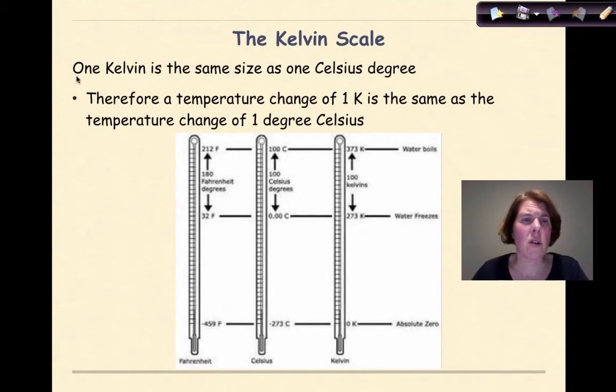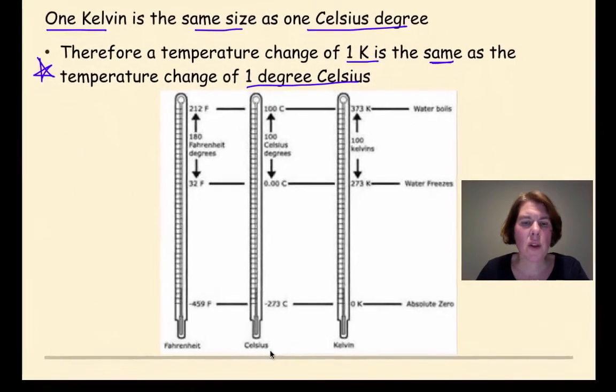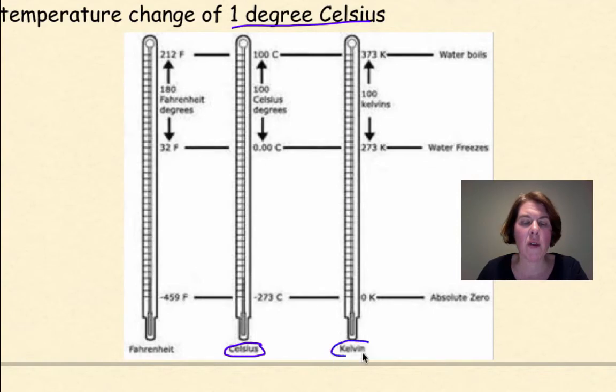So let's look at the Kelvin scale. One Kelvin, and this is something that you really need to know, one Kelvin is the same size as one degree Celsius. Therefore, I'm going to put a big star by this, a temperature change of one Kelvin is the same as the temperature change of one degree Celsius. And a point here, you never say degrees Kelvin. It's just one Kelvin, one degree Celsius. So if we look at our Celsius thermometer right here and our Kelvin thermometer right here, we'll see where water freezes at 273 Kelvin and zero degrees Celsius. Where water boils is 373 Kelvin and 100 degrees Celsius.